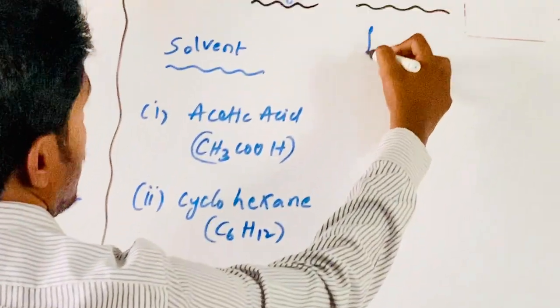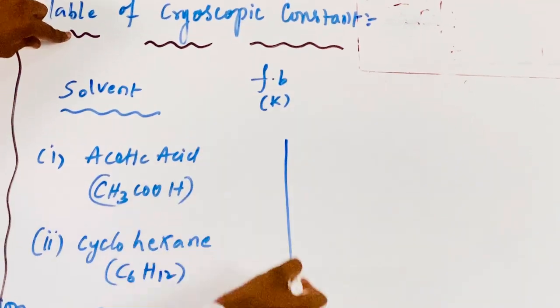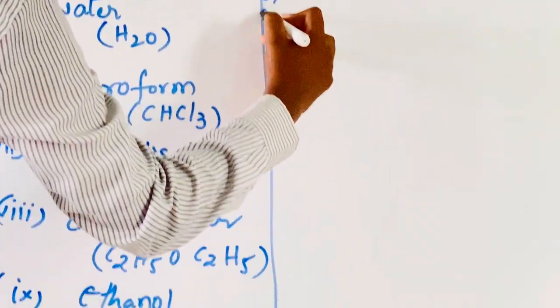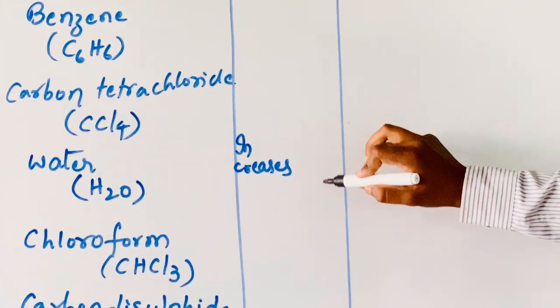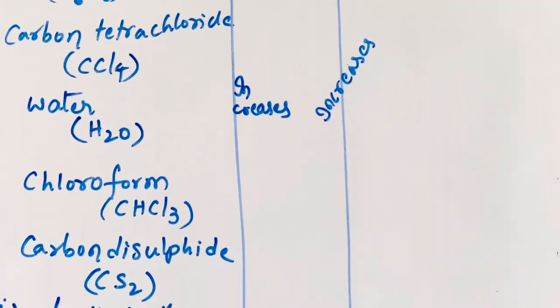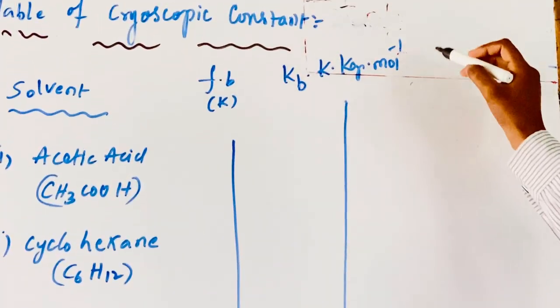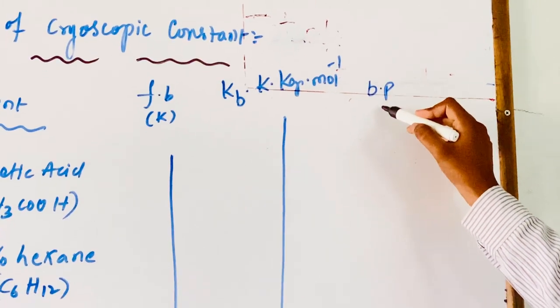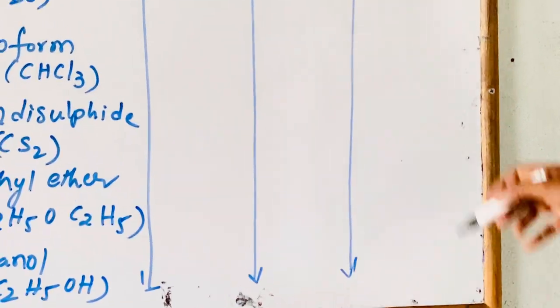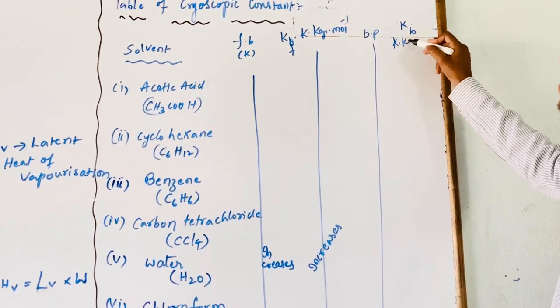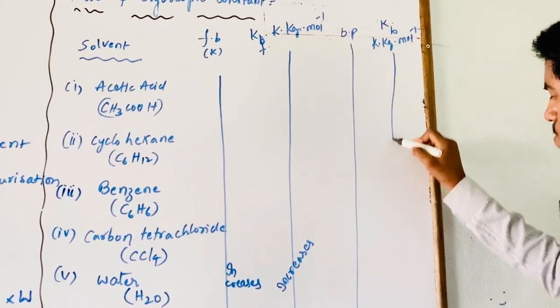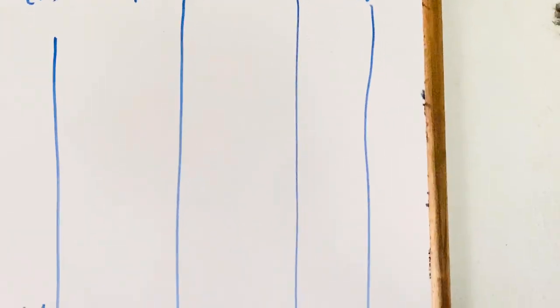Coming to the table values: in terms of Kf (freezing point constant), the values from top to bottom are increasing. In units of K·kg per mole, the values also increase from top to bottom. For boiling point, represented by Kb, the values similarly increase from top to bottom in units of K·kg per mole.